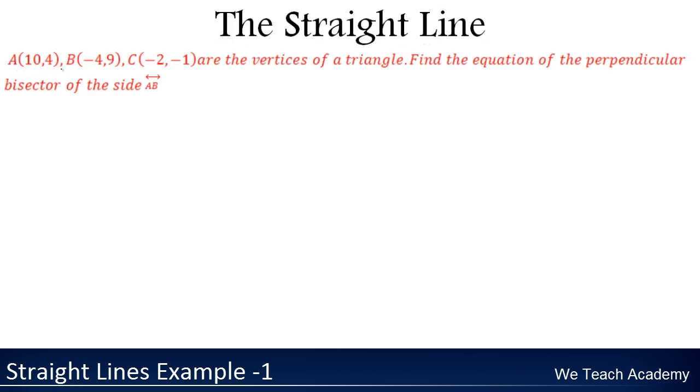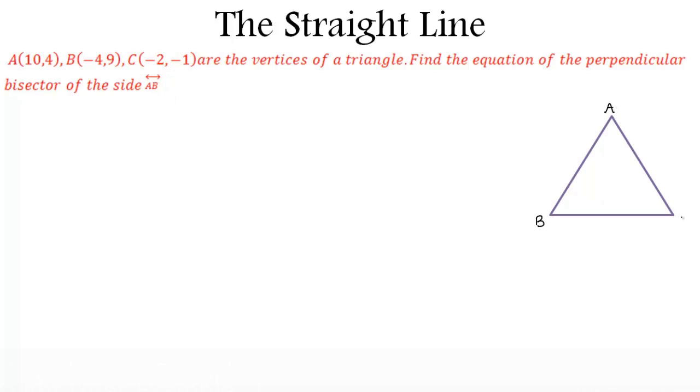We are given three points which are the vertices of a triangle, and we need to find the equation of the perpendicular bisector of side AB. First, let us consider a rough diagram of triangle ABC.